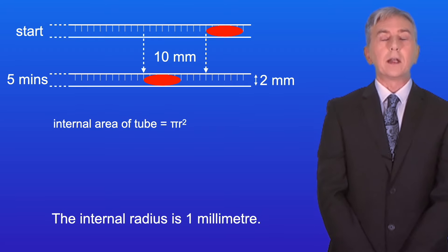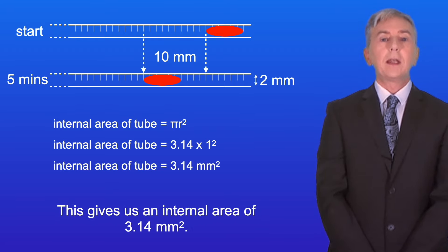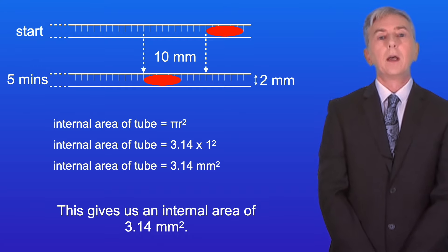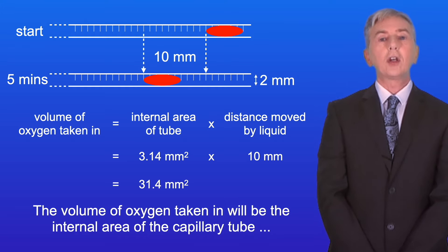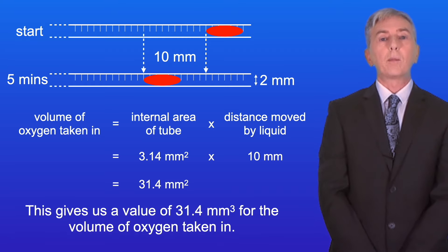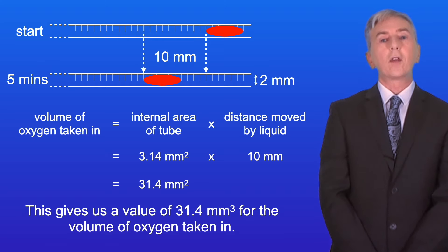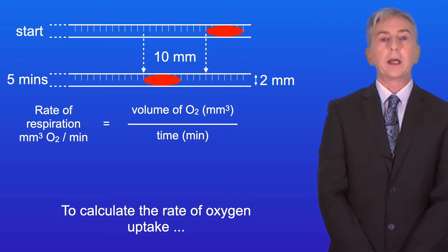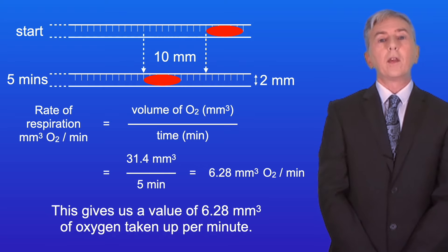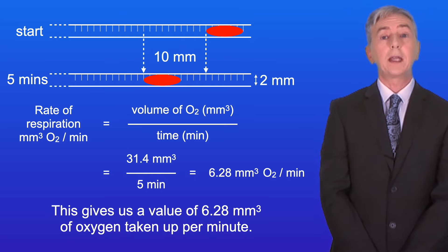The internal radius is 1 millimetre, giving us an internal area of 3.14 millimetres squared. The volume of oxygen taken in will be the internal area of the capillary tube multiplied by the distance moved by the liquid, giving us a value of 31.4 millimetres cubed. To calculate the rate of oxygen uptake we divide the volume of oxygen taken up by the time, giving us 6.28 millimetres cubed of oxygen taken up per minute.